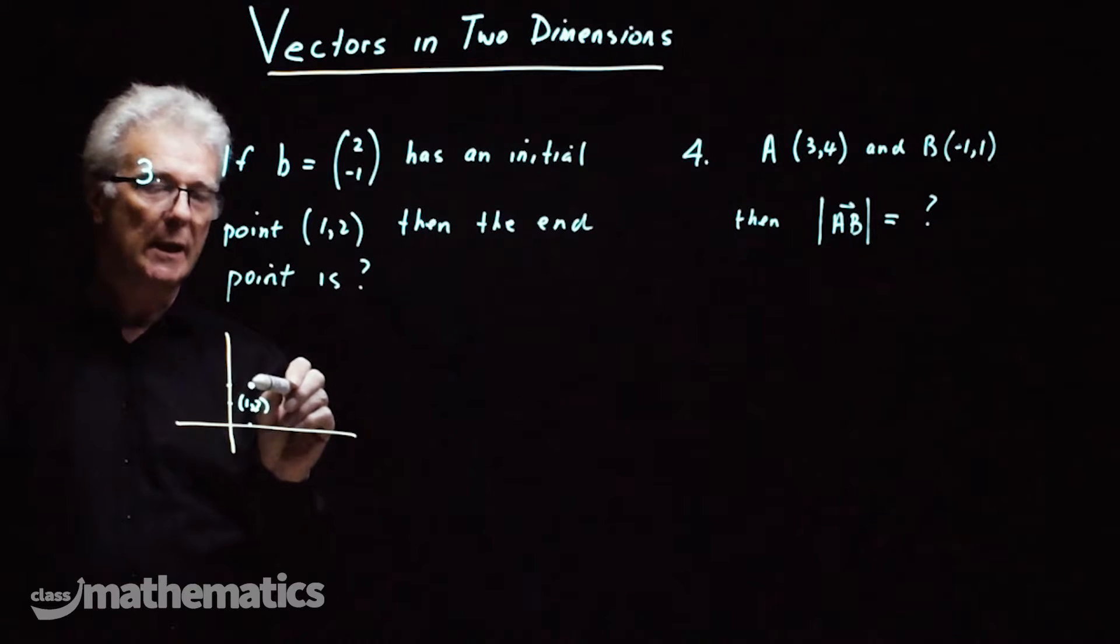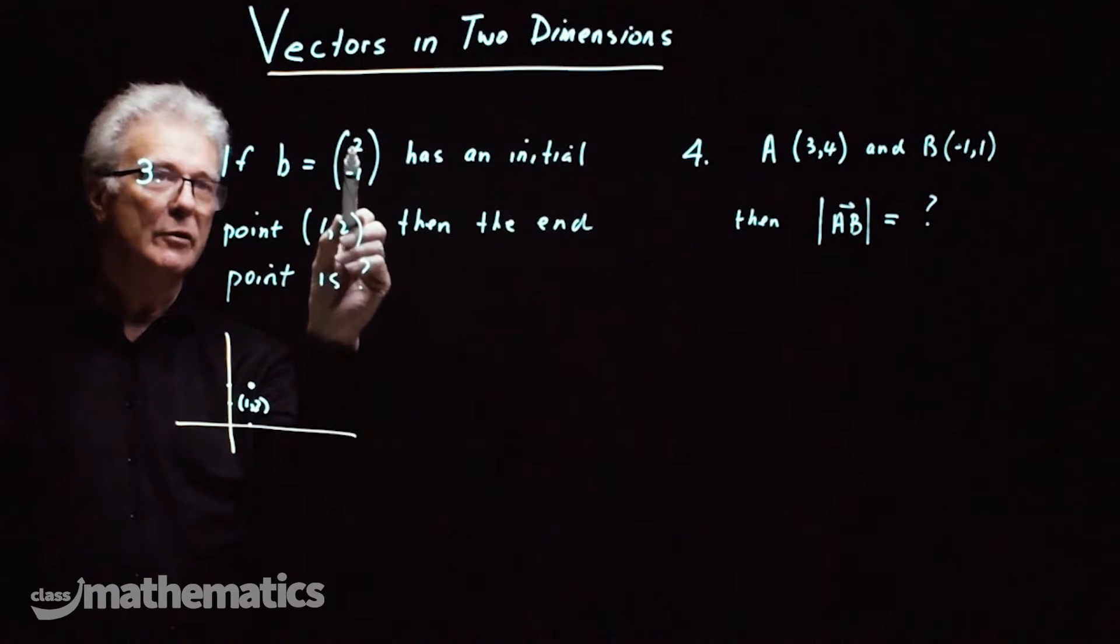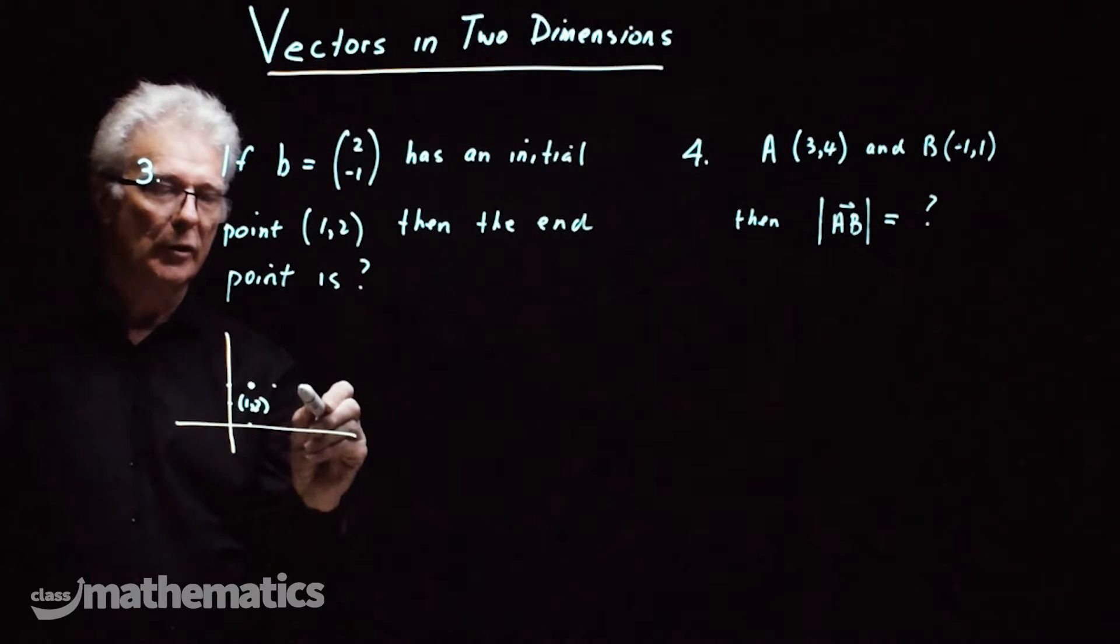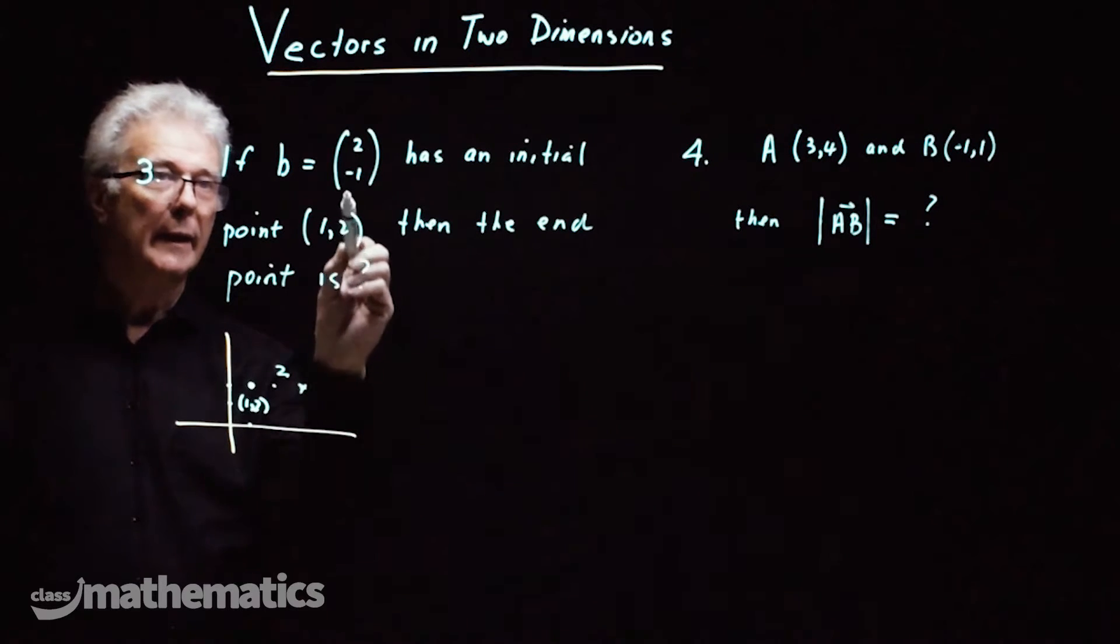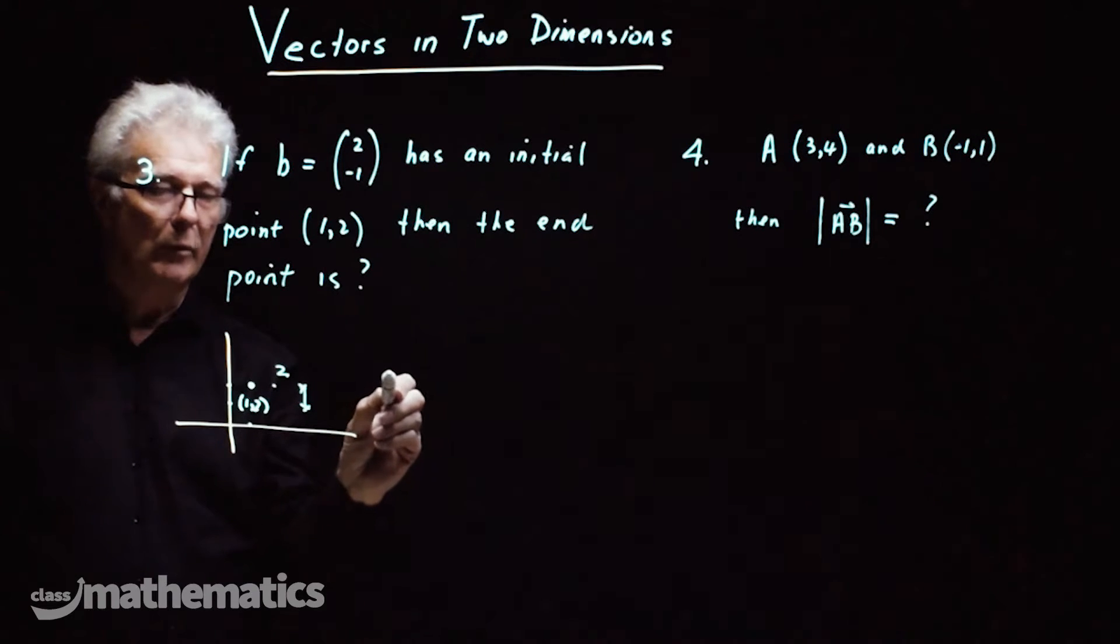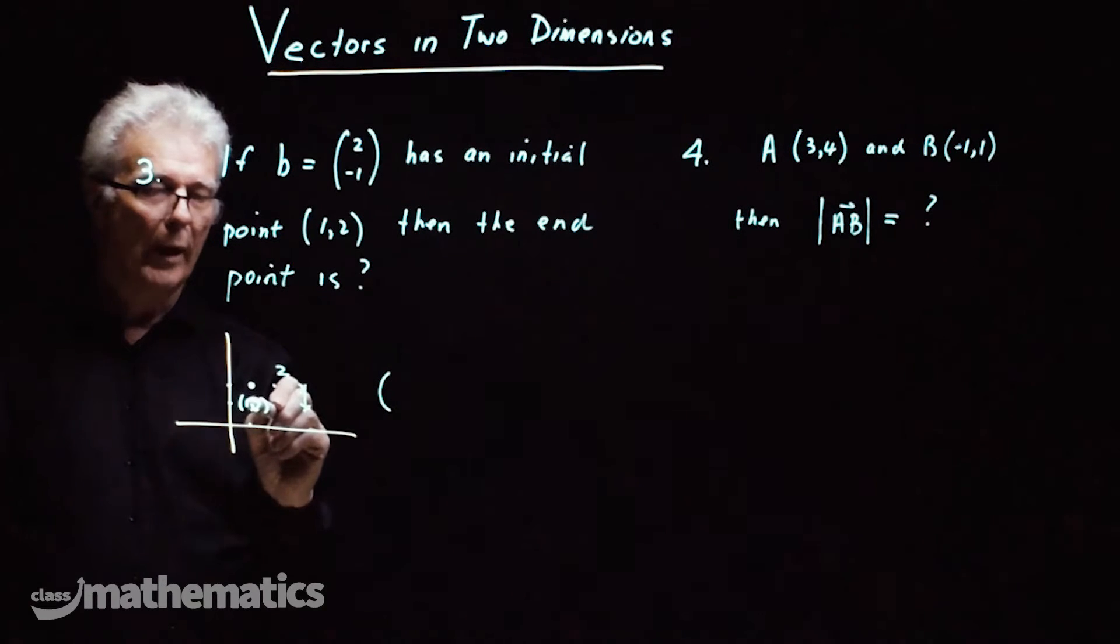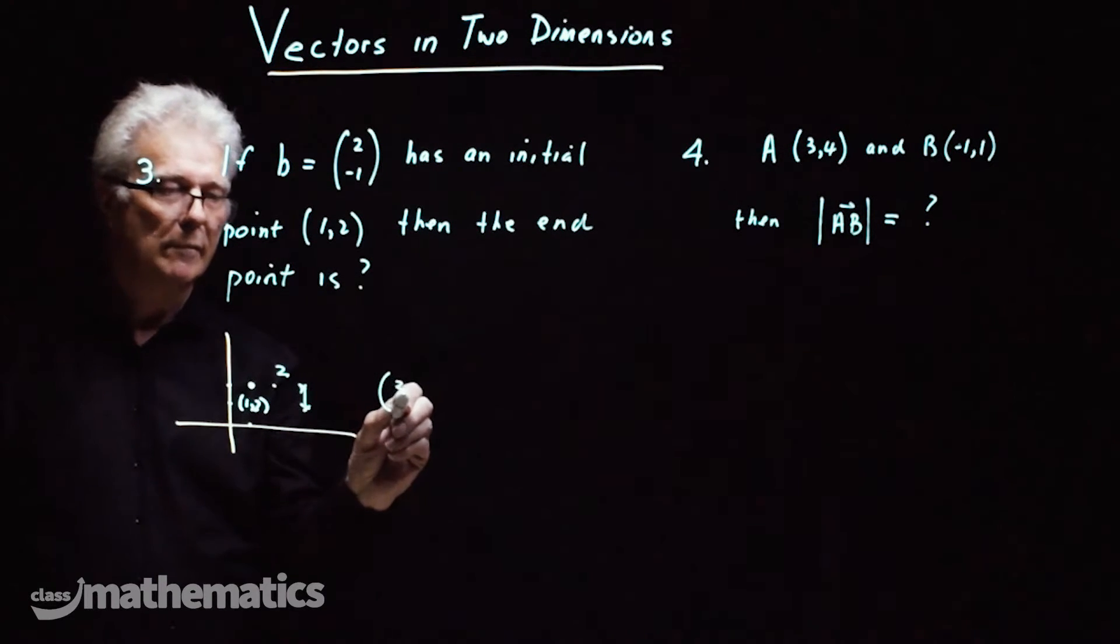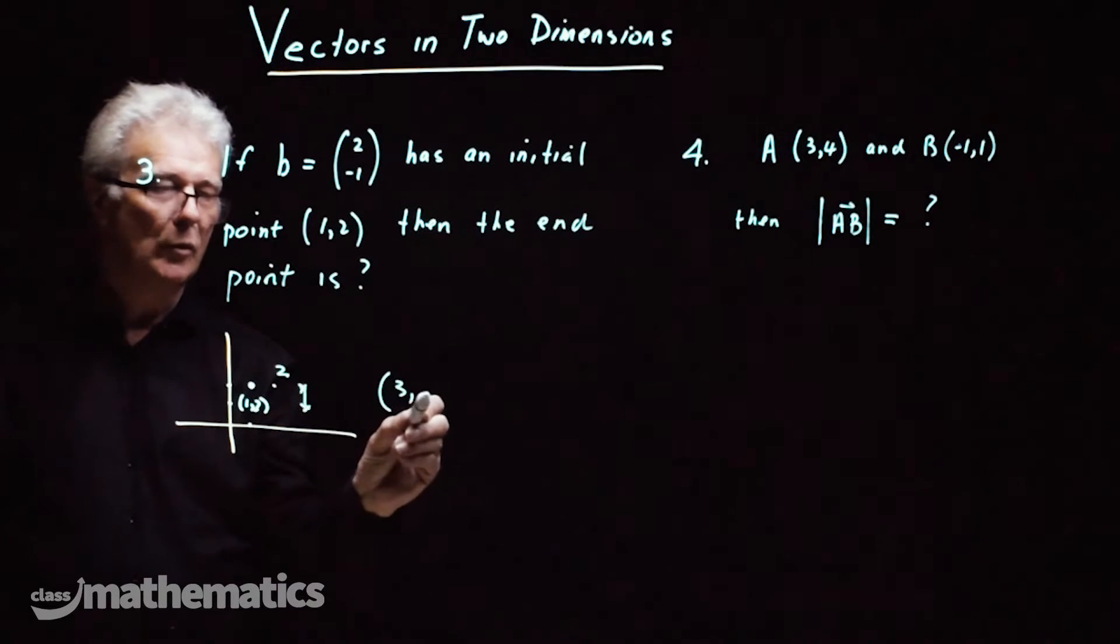So what we need to do is we start here and it tells us to go out 2, 1, 2 and down 1. So we go out 2, that point would be equal to 1 plus 2 is 3 and down 1 from 2, 1.